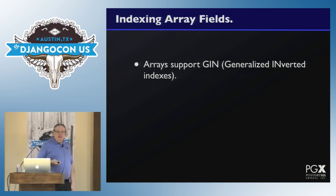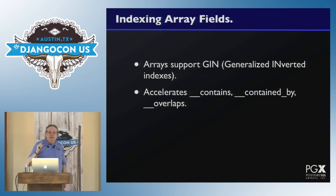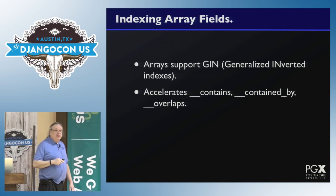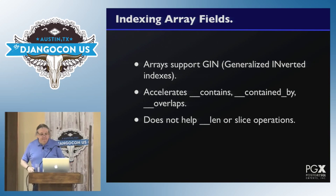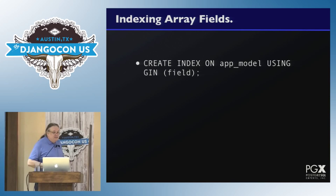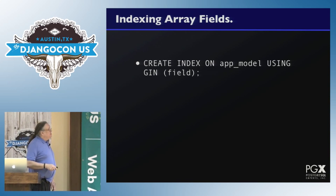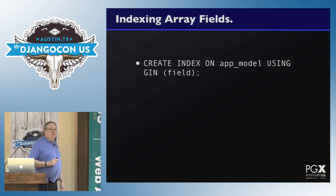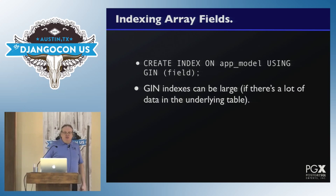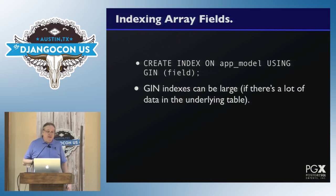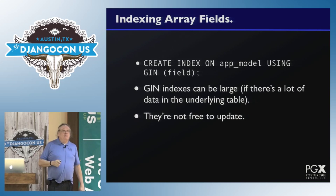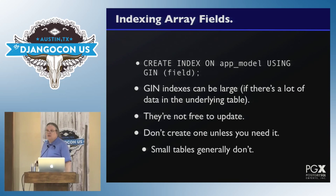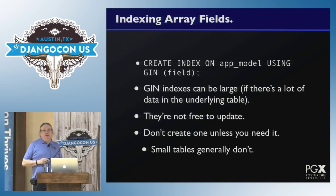Arrays support GIN indexes. These accelerate 'contains', 'contained_by', and 'overlaps'. They will use the index to make these queries go faster. GIN indexes don't help length or slice operations though, so be aware of that. At the SQL level, you create an index on app_model using GIN on the field. One thing to note is GINs can be large, especially with a lot of data, and they're not free to update. Create them only if you're going to be doing operations that will be accelerated by them. If it's a small table, don't create a GIN index.